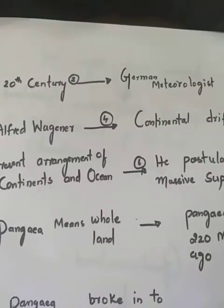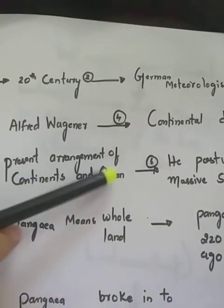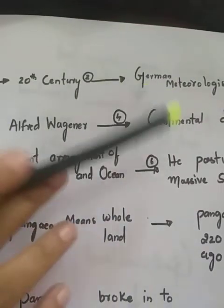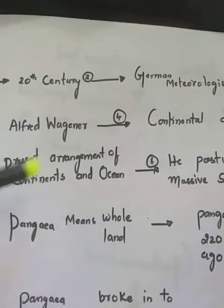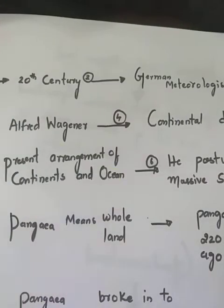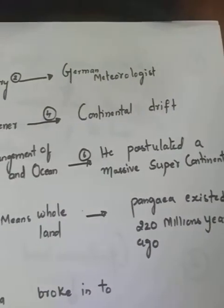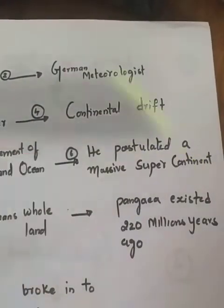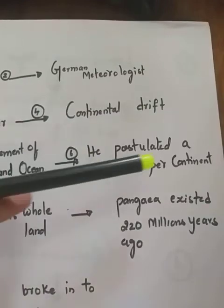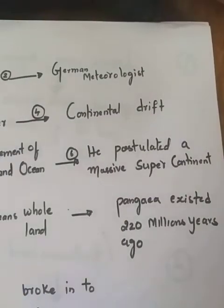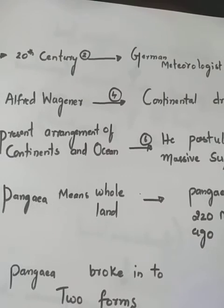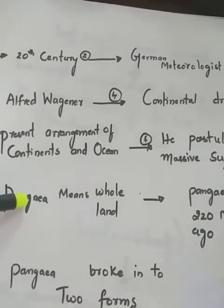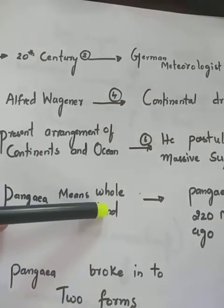He explained the present arrangement of the continents and ocean. And he postulated a massive supercontinent. What is the name of the continent? Pangaea. Pangaea means what? Whole land. What is the meaning of Pangaea? Whole land.